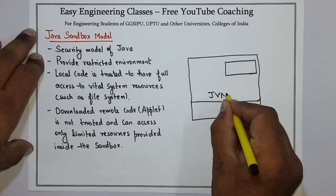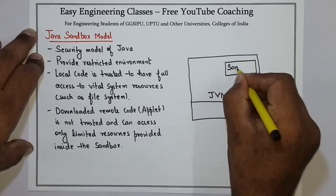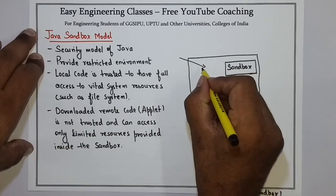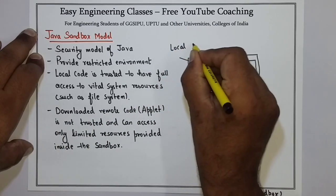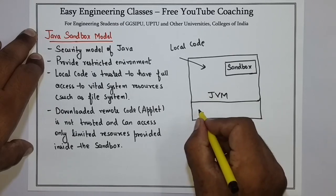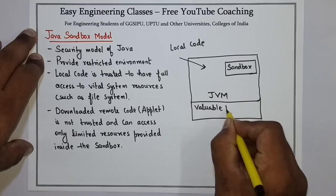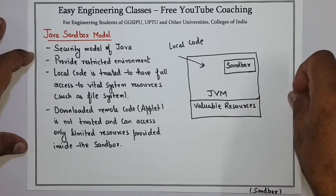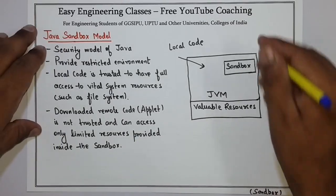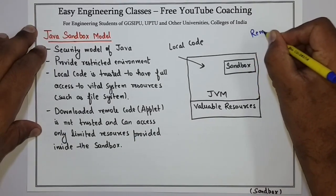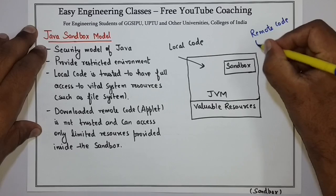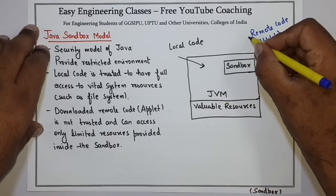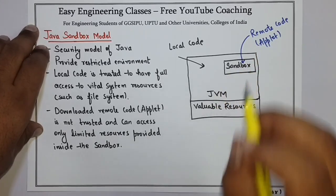Here is a diagram you can draw. This is the JVM — Java Virtual Machine — which has access to the valuable resources such as the file system. A local code has access to those available resources. This is the applet code that you can represent in the diagram. This applet cannot access all those valuable resources; the applet can access only the limited resources present inside the Sandbox.